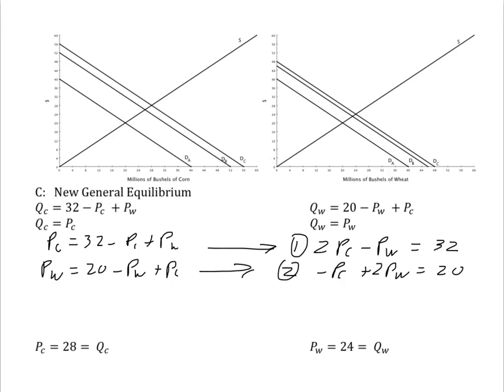So I multiply the first equation by 2. Equation 1 prime is now 4PC minus 2PW is equal to 64. Add the two together and I get 3PC is equal to 84. PC is equal to 28.